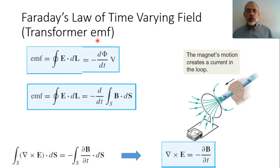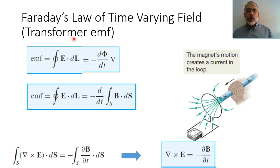In the following slide, we are going to see how the situation changes if we are moving the coil — so it will be called the motional EMF, instead of the transformer EMF. In the present case, the coil is steady and fixed, and we are changing the magnetic flux.